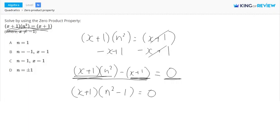So now we have our familiar structure of the equation. And we just have to set this part equal to zero and that part equal to zero. So it's going to say x plus 1 is equal to zero and n squared minus 1 is equal to zero.